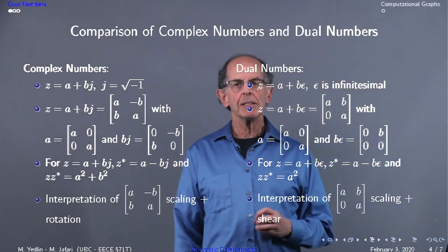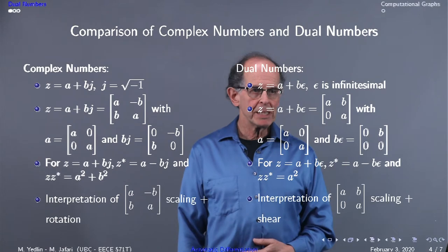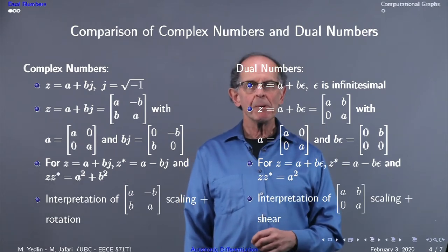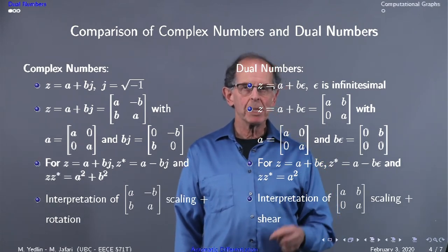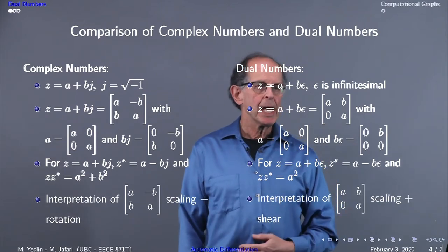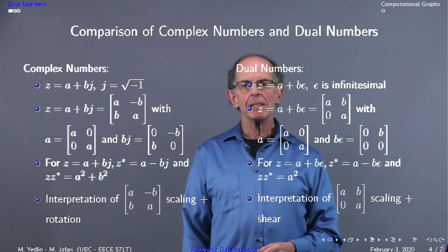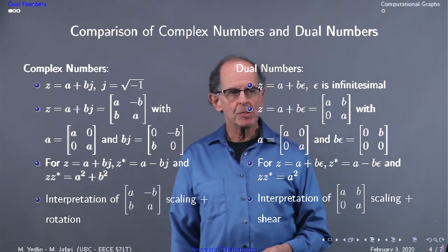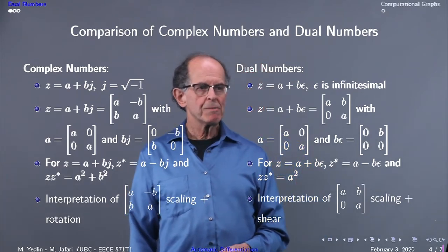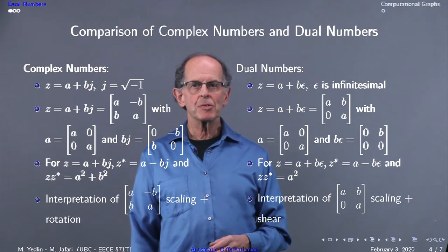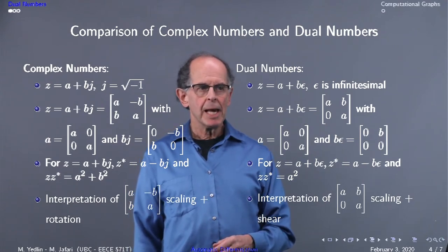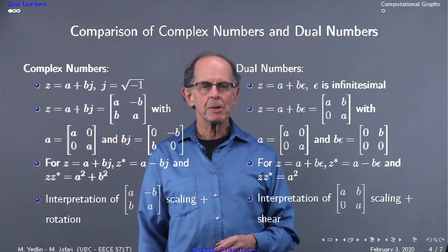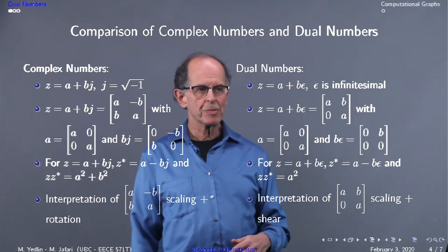Interpretation: for a complex number matrix, the diagonal represents scaling by a, and the off-diagonal represents rotation. For dual numbers, we have the same scaling interpretation on the diagonal, and b in the upper right represents a shearing transformation.